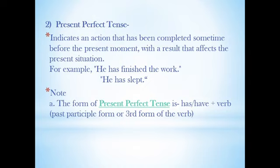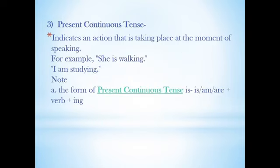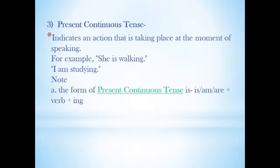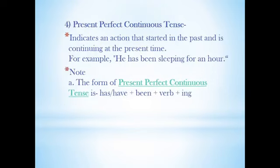Present perfect tense indicates an action completed some time before the present moment with a result that affects the present situation. For example: 'He has finished the work'; 'He has slept.' The form is 'has/have' plus verb in past participle form. Note: the simple present does not have 'has/have' — you just put the verb in its natural form. Present continuous tense indicates an action taking place at the moment of speaking. For example: 'She is walking'; 'I am studying.' The form is 'is/am/are' plus verb in '-ing' form.